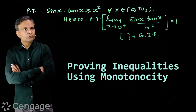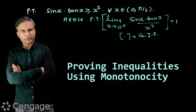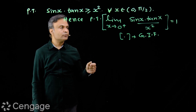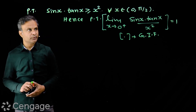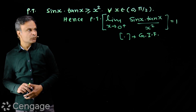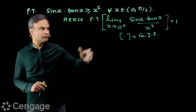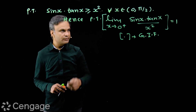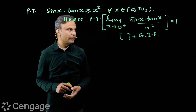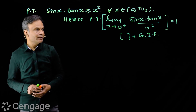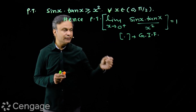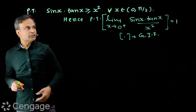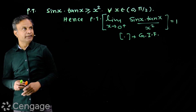We have this question: prove that sin x · tan x is greater than or equal to x² for all x belonging to the open interval (0, π/2). And hence prove that the greatest integer of the limiting value — that is, limit x tends to 0⁺ of sin x · tan x over x² — is equal to 1. Here square brackets represent the greatest integer function.